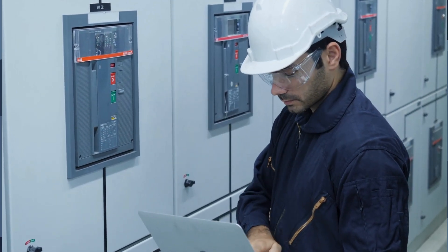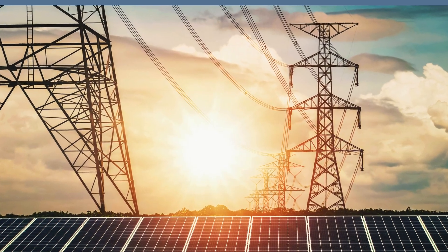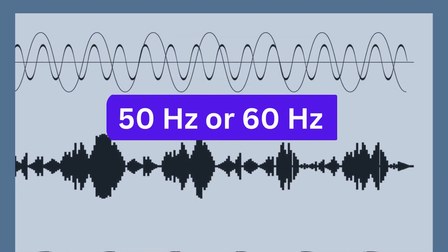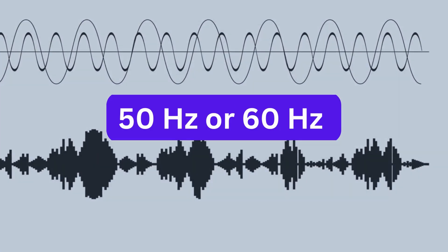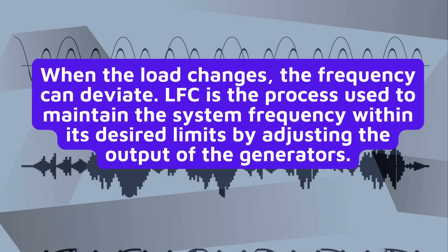First, let's define load frequency control. In any power system, maintaining a constant frequency is crucial. In most parts of the world, that's 50 or 60 Hz. However, when the load changes, the frequency can deviate. LFC is the process used to maintain the system frequency within its desired limits by adjusting the output of the generators.